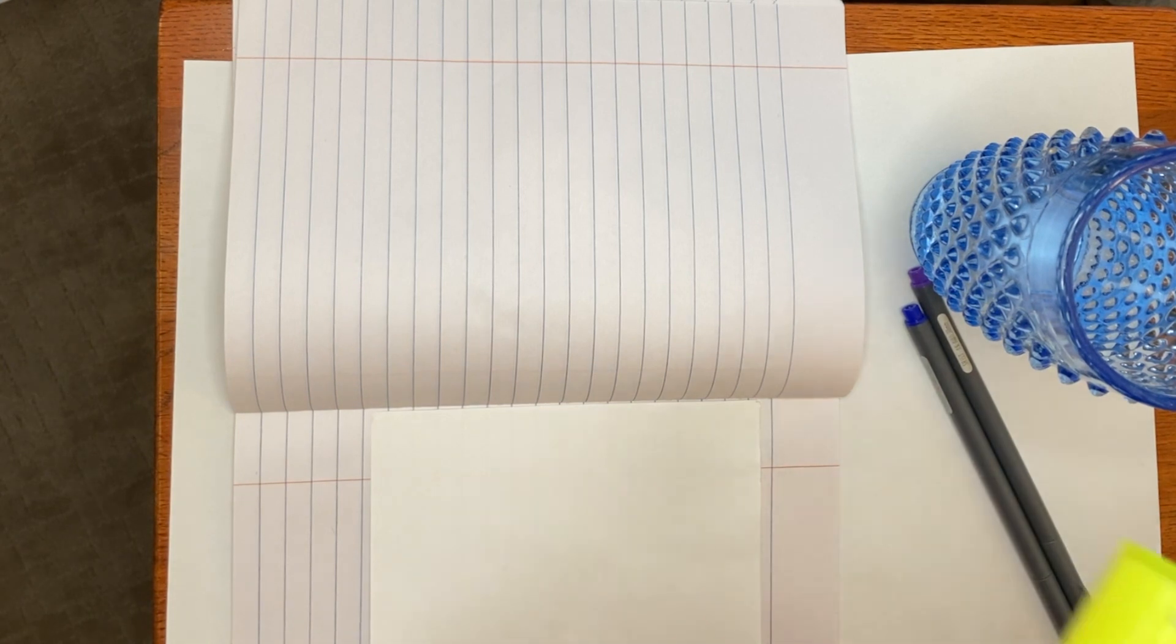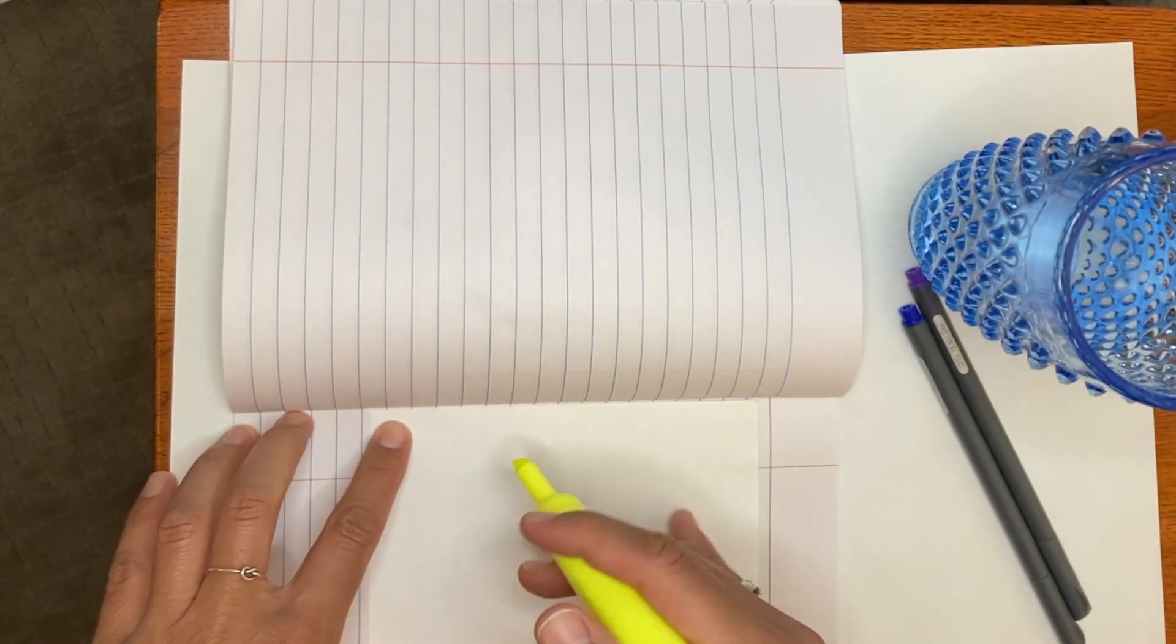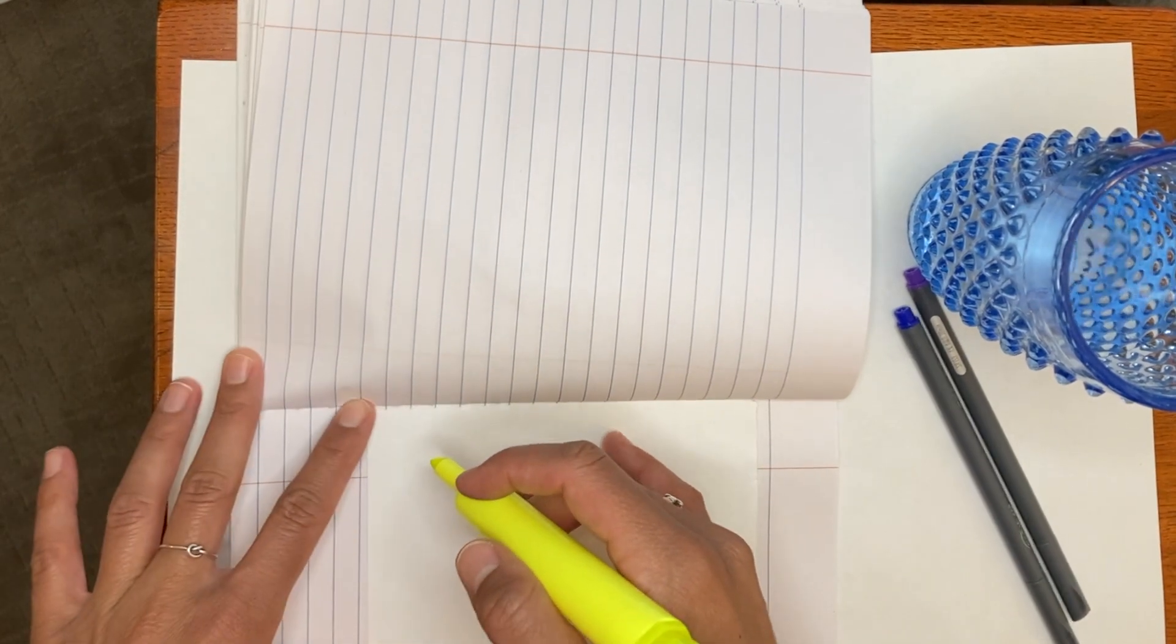First, pick a color, any color. I'm going to choose yellow and draw whatever you'd like on the page.